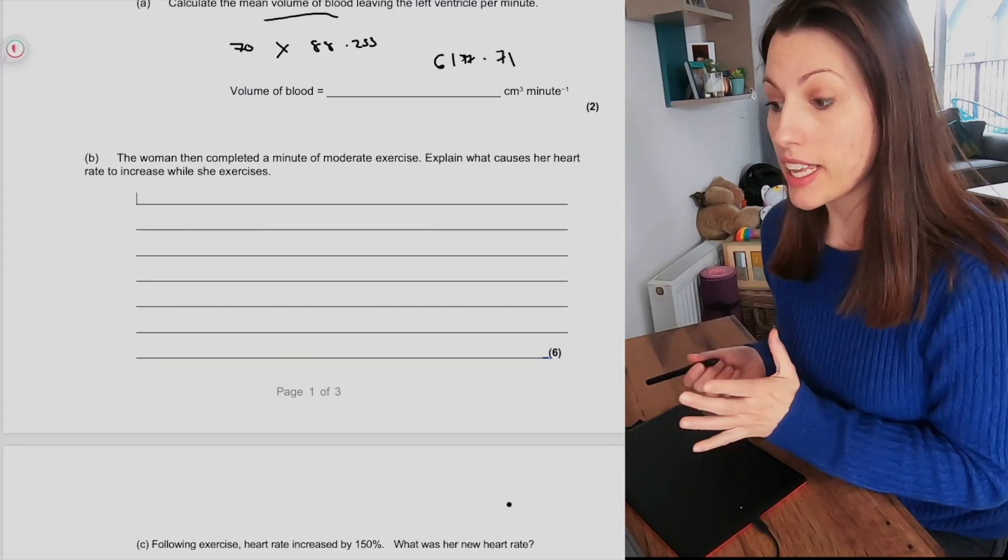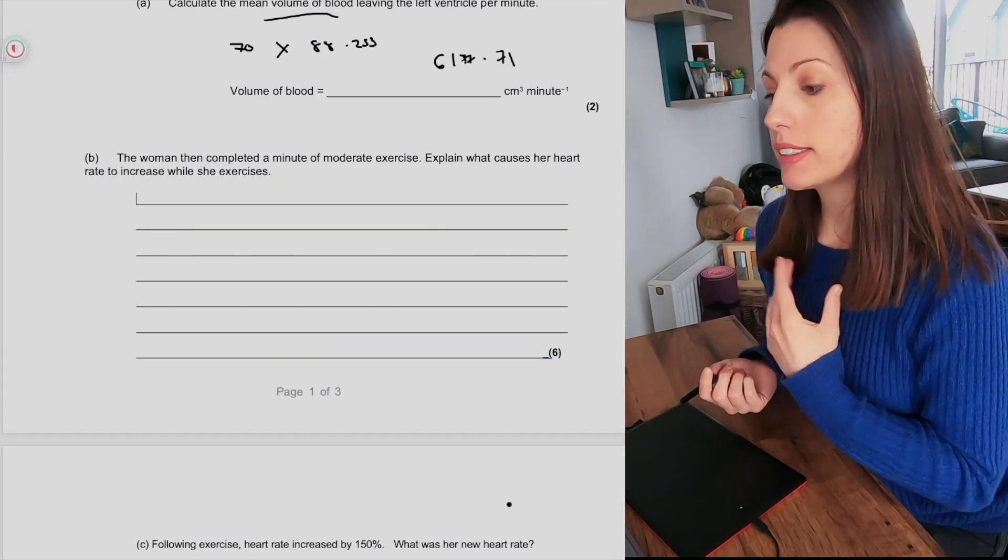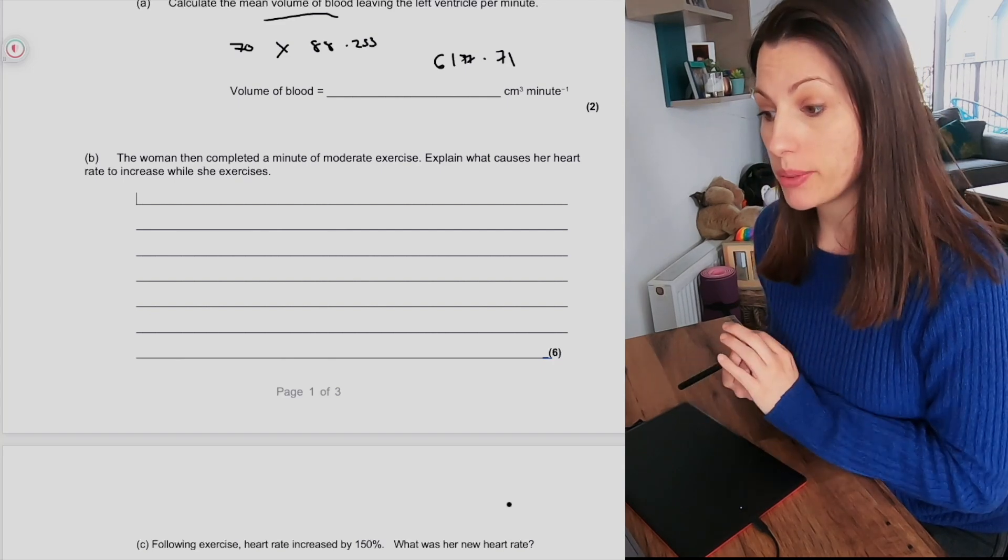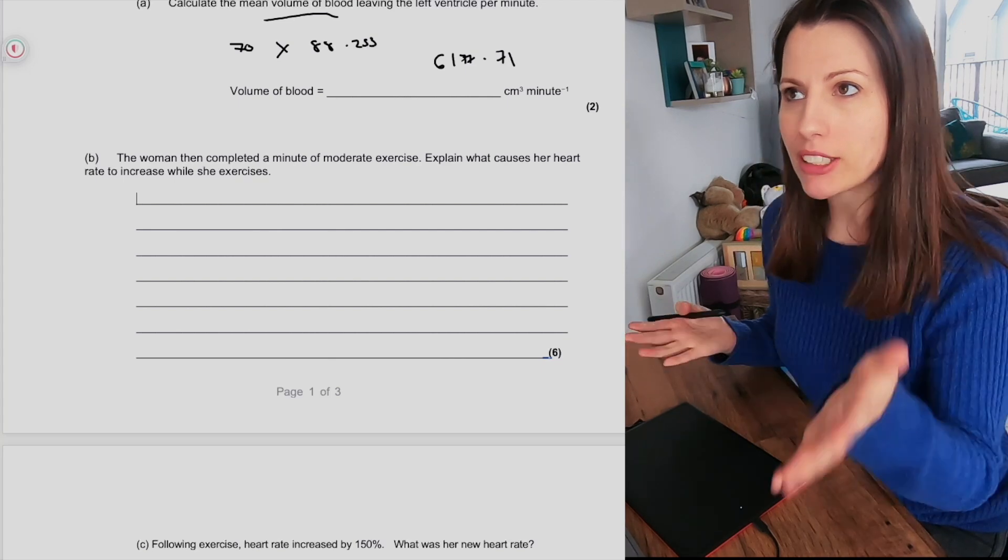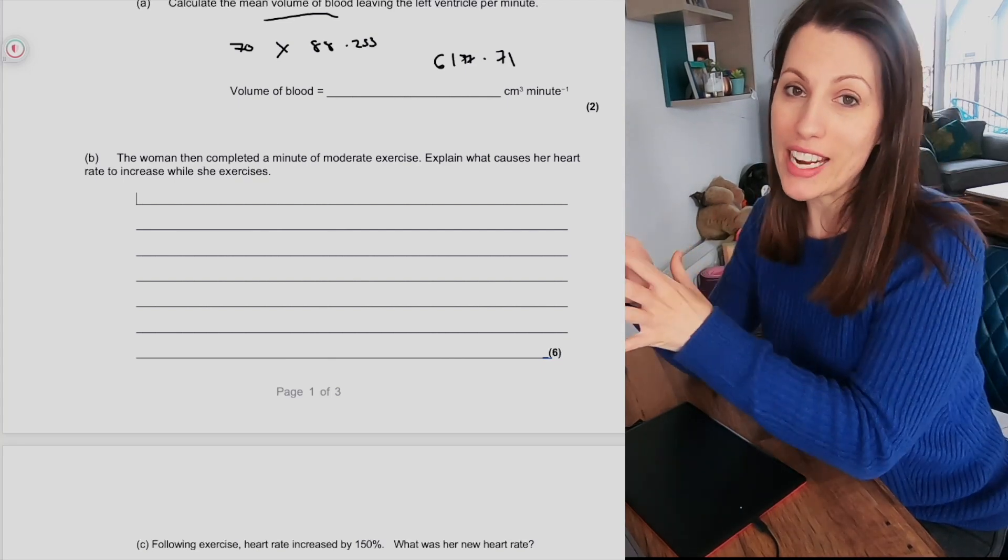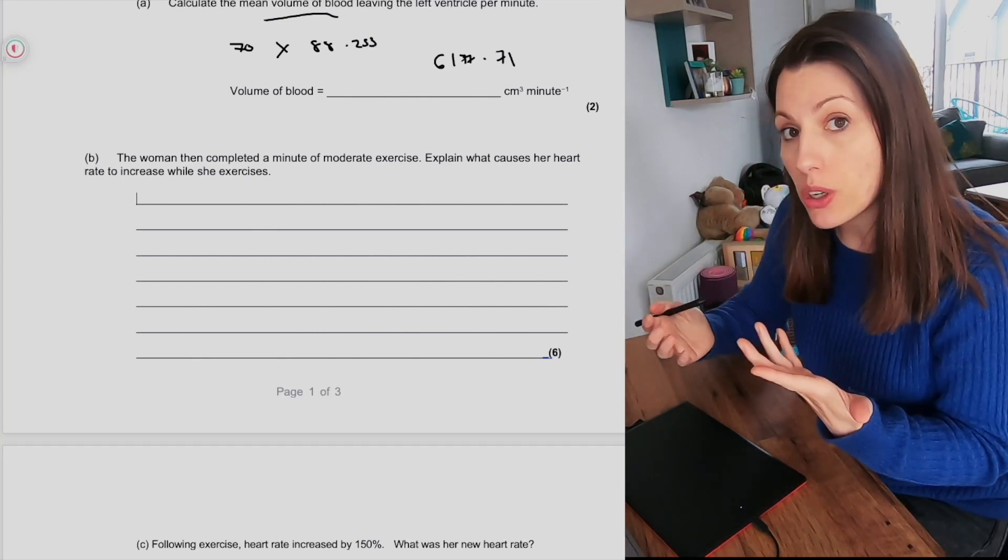Okay, so the woman then completed a minute of moderate exercise, and you have to explain what causes her heart rate to increase while she exercises. So this question is now linking mass transport but actually it's moving into the nervous coordination. So what is controlling the heart rate?